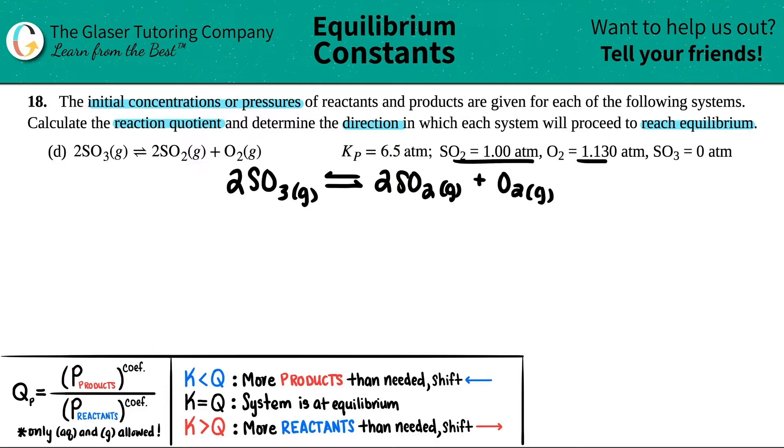SO2 gas plus O2 gas. The next thing I'm going to do is write out the pressures they told me. Now I know these are pressures because atm is a unit of pressure, and also the Kp they gave me - P stands for pressure as well. So let's see, SO2 they told me I had 1.00 atm, so that's a product. I'm just going to say I have 1.00 atm here.